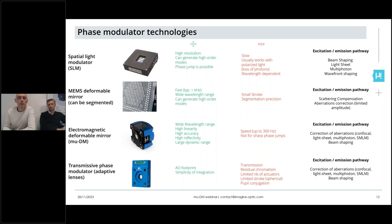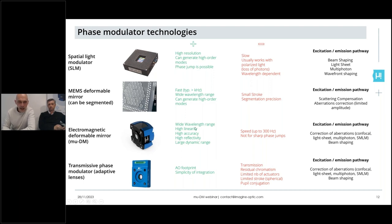There are also currently limitations in the number of actuators and stroke achievable with transmissive devices. Even if placed just after a microscope objective, pupil conjugation will not be perfect because they cannot be integrated at the exact pupil plane. The last family is electromagnetic deformable mirrors, which we will now discuss in detail.